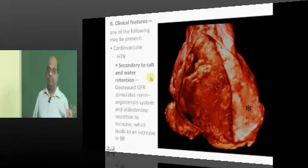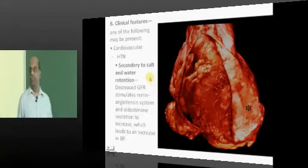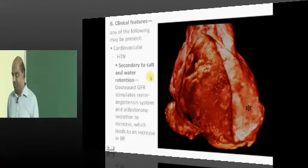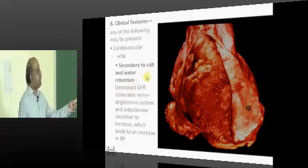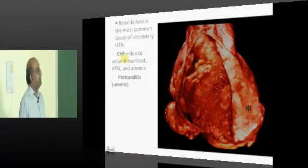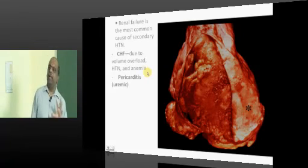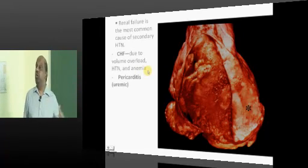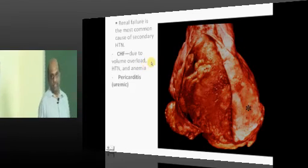When the patient has CKD, how does he present? He walks into the OPD with hypertension, which is the common presenting problem, along with water and salt retention. Congestive heart failure can worsen. And with chronic kidney disease, there is an excessive amount of urea, which can lead to uremic pericarditis — one of the important complications of chronic kidney disease.